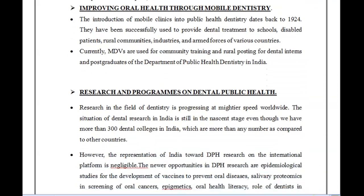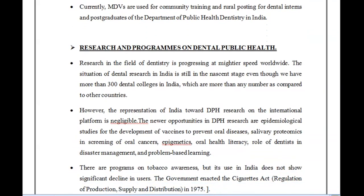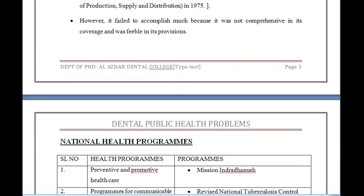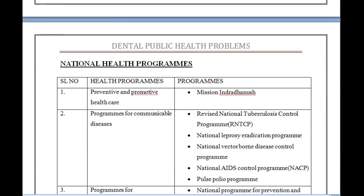Research in dental public health is at a very nascent stage, even though India has over 300 dental colleges. Research in other branches is happening, but it pertains to clinical and individual-level concerns. Public health is not a priority in any of the research being conducted. It is important to distinguish dental health, which is an individual's oral health, from dental public health, which concerns the oral health of a population.